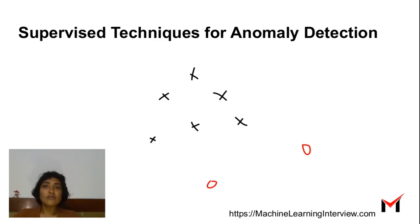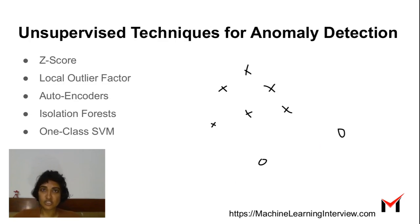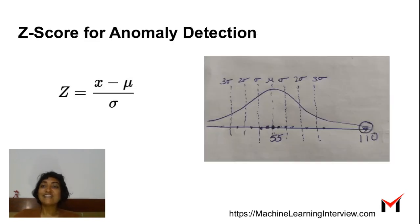But very often we do not have the luxury of such labels and we must resort to unsupervised techniques for anomaly detection. We will talk about five popular techniques for anomaly detection that are unsupervised at a high level, and we will have detailed videos for these later. The first is z-score for anomaly detection.